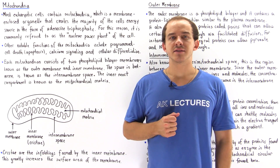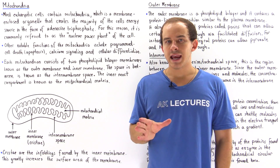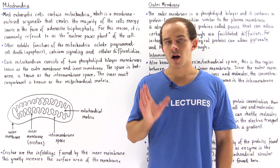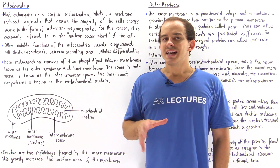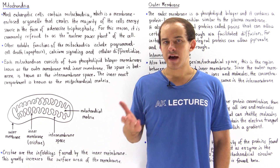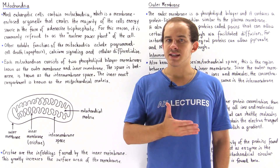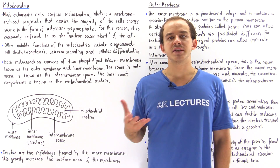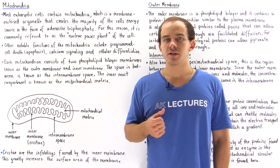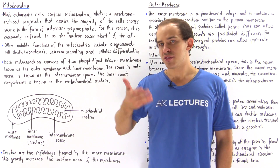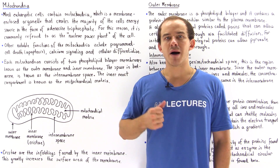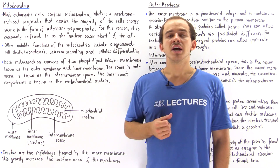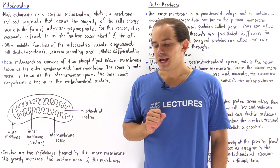Most eukaryotic cells contain an organelle known as the mitochondria. The number of mitochondria found in any given cell depends on the type of cell we are talking about. Some cells contain thousands of mitochondria while some cells contain only one.